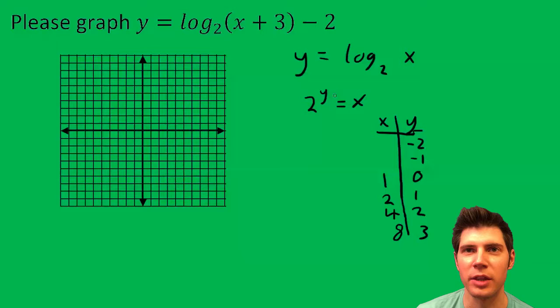x is 8. And then when y is negative 1, 2 to the negative 1 equals 1 half. So this is 1 half and then 1 fourth and so on.